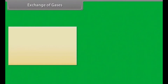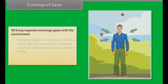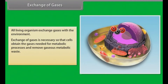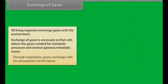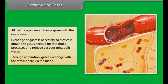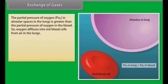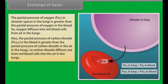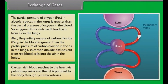Exchange of Gases. All living organisms exchange gases with the environment. Exchange of gases is necessary so that cells obtain the gases needed for metabolic processes and remove gaseous metabolic waste. Through respiration, gases exchange with the atmosphere via the blood. The partial pressure of oxygen in alveolar spaces in the lungs is greater than the partial pressure of oxygen in the blood, so oxygen diffuses into red blood cells from air in the lungs. The partial pressure of carbon dioxide in the blood is greater than in the air in the lungs, so carbon dioxide diffuses out from red blood cells into the air in the lungs.